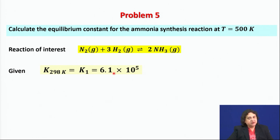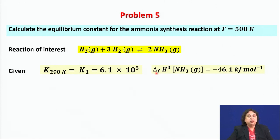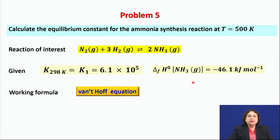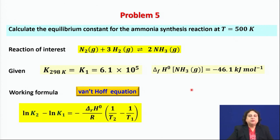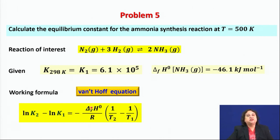We also know that the standard enthalpy of formation of ammonia gas is −46.1 kJ/mol. We use the Van't Hoff equation, which tells us how the equilibrium constant depends on temperature: knowing K₁ at T₁, we can predict K₂ at T₂ provided we know the standard reaction enthalpy ΔRH°. R is the universal gas constant.